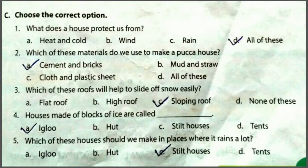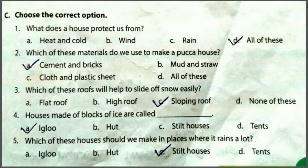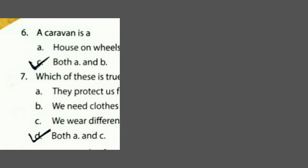Fifth MCQ: which houses should we make in places where it rains a lot? Options: igloo, hut, stilt houses or tent. तो जहाँ ज्यादा बारिस होती है वहाँ stilt houses बनाने चाहिए, क्योंकि वहाँ पानी ज्यादा होता है इसलिए stilt के उपर house होने से पानी house में नहीं आता.